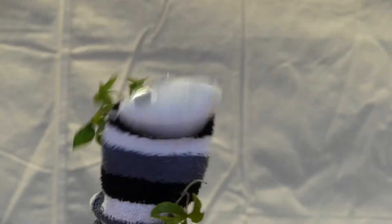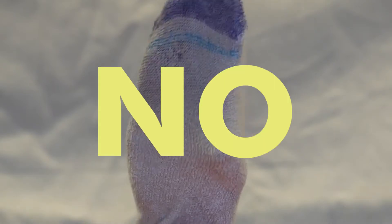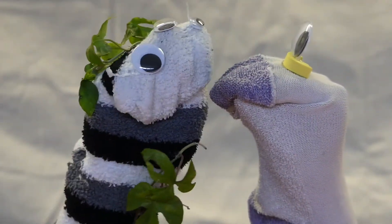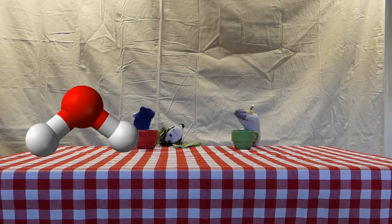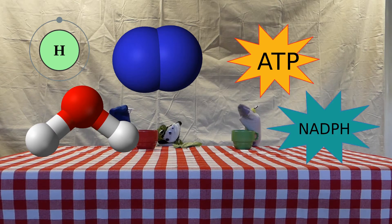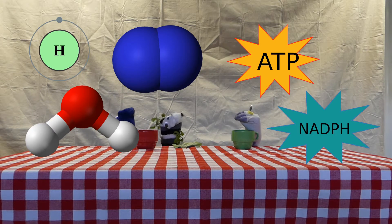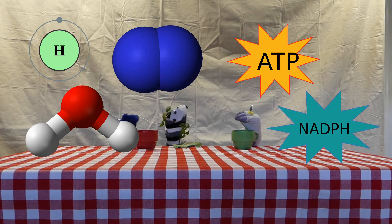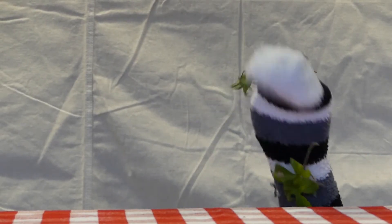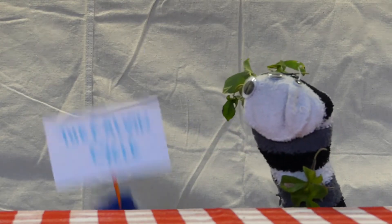Now when you look at the light-dependent reactions, isn't it exciting? No. Come on, take another look — light splitting water, oxygen and electrons, they're producing ATP and NADPH. Think you're getting the hang of it now, using the light to make energy.